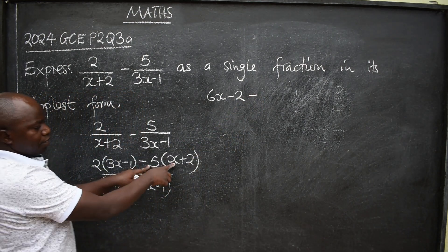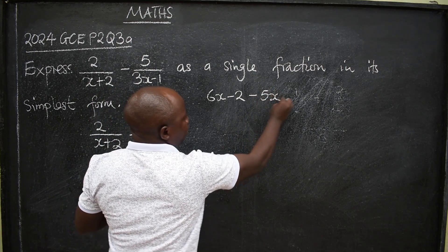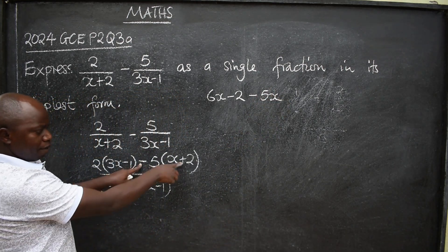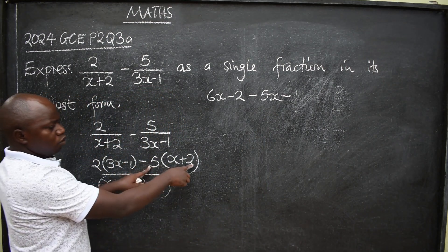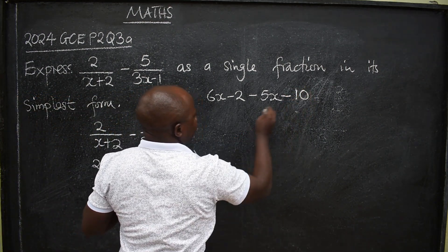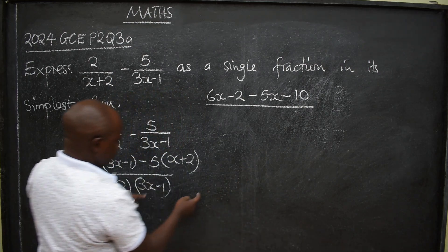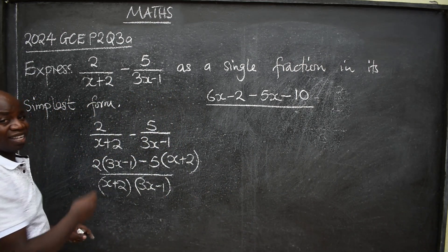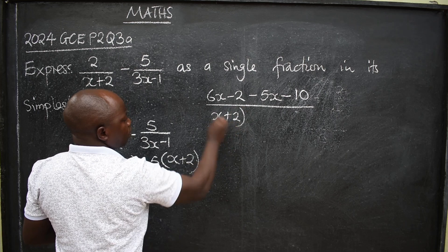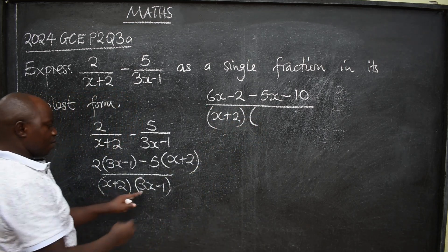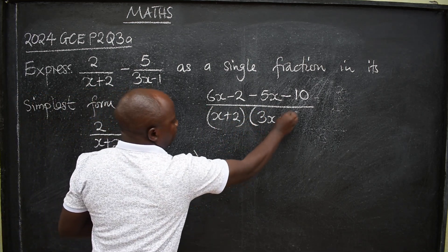5 times x. It will give us 5x. Negative times positive here. It will give us a minus. Then 5 times 2. Then 5 times 2 will be a 10. Divide everything by the denominator that you have, which is x plus 2. Then we have 3x minus 1.